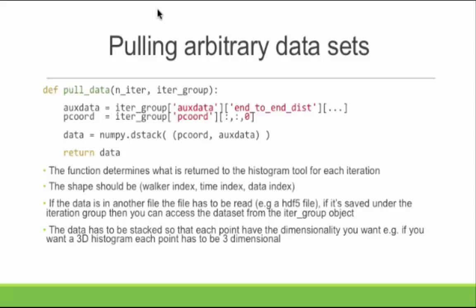When you're doing the weighted ensemble sampling, you're only looking at the endpoint for the split-merge algorithm. For this tool, you're looking at all the data you're capturing. Split-merge only happens at the last endpoint.